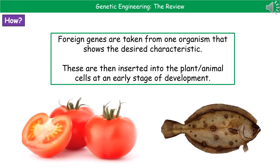The way we actually do this is that we first identify a gene that shows the desired characteristic — what we want to show in our future organism. We then take those foreign genes from one organism and insert them into the plant or animal cells at a really early stage of their development, because that means every cell that comes after will also have those genes in its genome, producing that protein or characteristic throughout all of those cells.